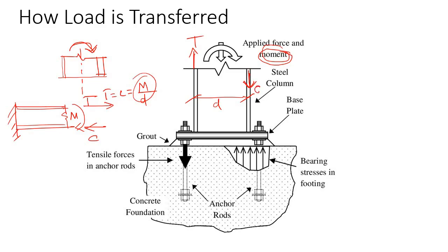The compressive force is transferred directly to the foundation through bearing. But the tensile force tries to uplift and detach the column flange from the foundation. To keep the column flange in place, you have to put an anchor bolt. The tensile force coming into the flange is transferred to the anchor bolt, and since this force tries to pull out the anchor bolt, you need a head or nut at the end.